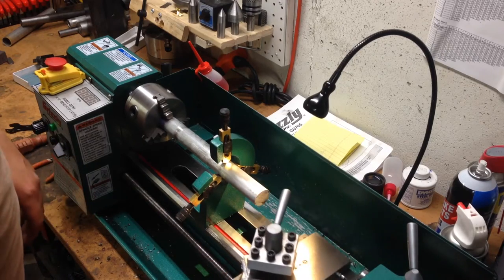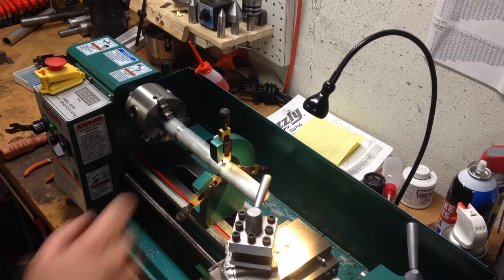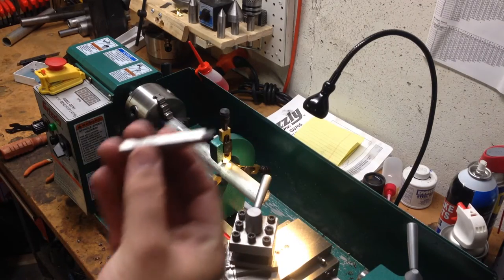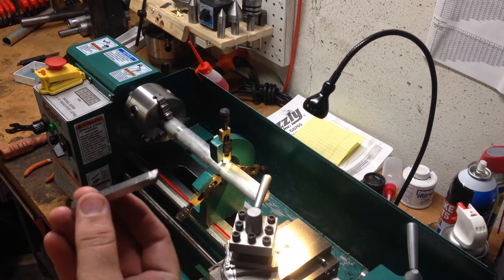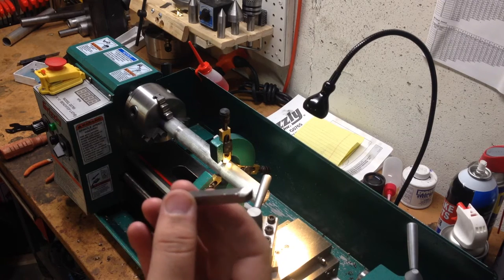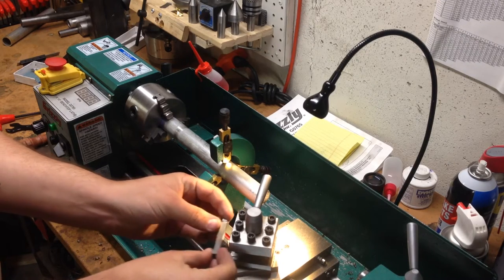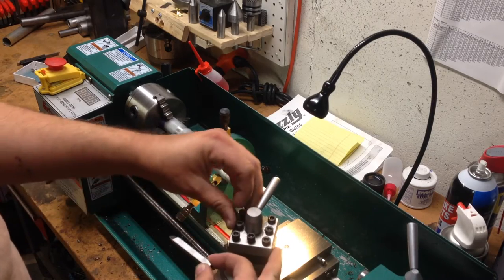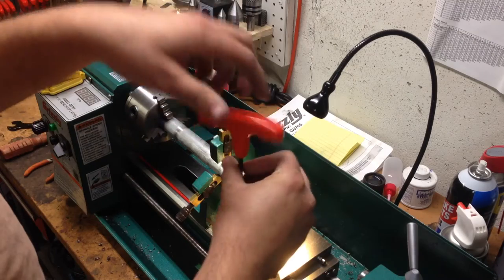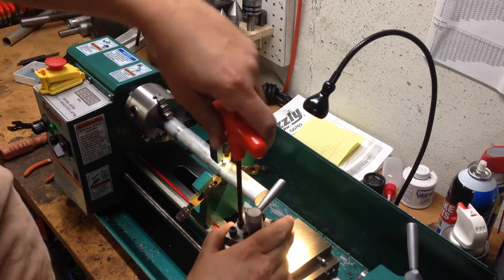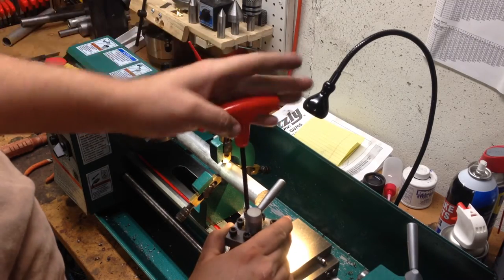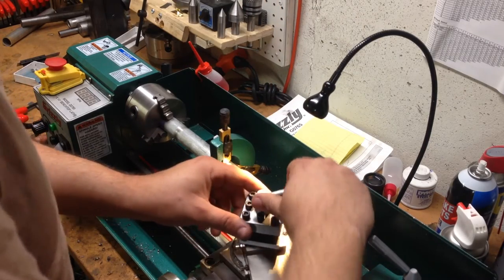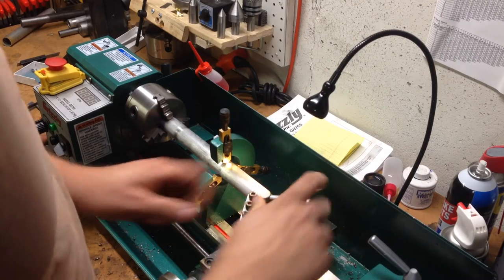The next thing to do, we will go ahead and get our tool mounted in the tool post. This is my high-speed home turned or home ground turning bit. What I'm going to do is mount it up here with the cutting edge just so. I'm going to set the tool post at an angle for facing. First operation.